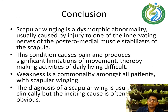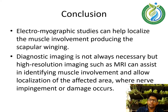Conclusion. Scapular winging is a dysmorphic abnormality usually caused by injury to one of the innervating nerves of the posterior medial muscle stabilizers of the scapula. This condition causes pain and produces significant limitations of movement, thereby making activities of daily living difficult. Weakness is common amongst all patients with scapular winging. The diagnosis is usually made clinically, but the inciting cause is often not obvious. Electromyographic studies can help localize the muscle involvement. Diagnostic imaging is not always necessary, but high-resolution MRI can assist in identifying muscle involvement and localizing the affected area where nerve impingement or damage occurs.